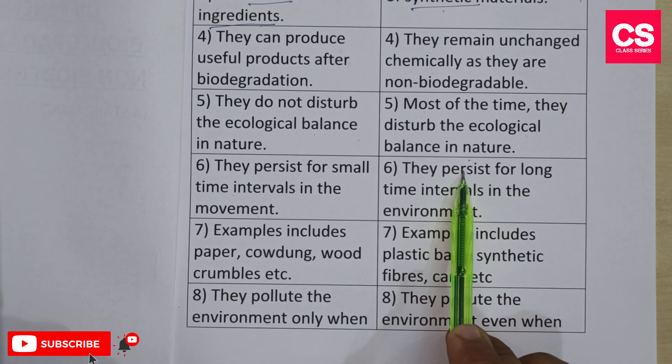The next difference talks about examples. Biodegradable wastes examples include paper, cow dung, wood crumbles, etc. Non-biodegradable wastes examples include plastic bags, synthetic fibers, cans, etc.